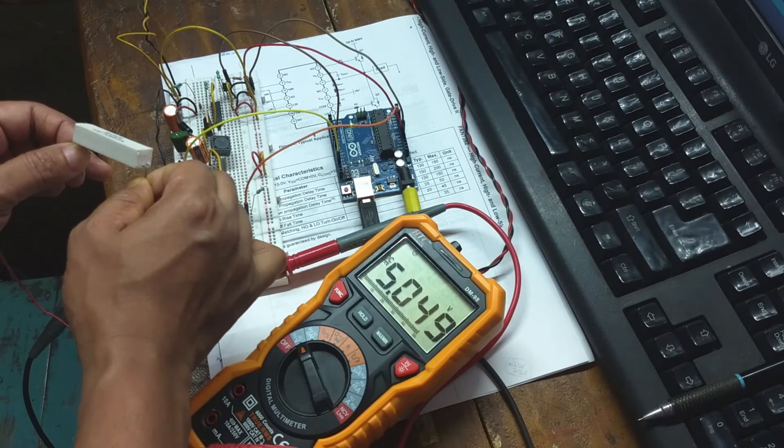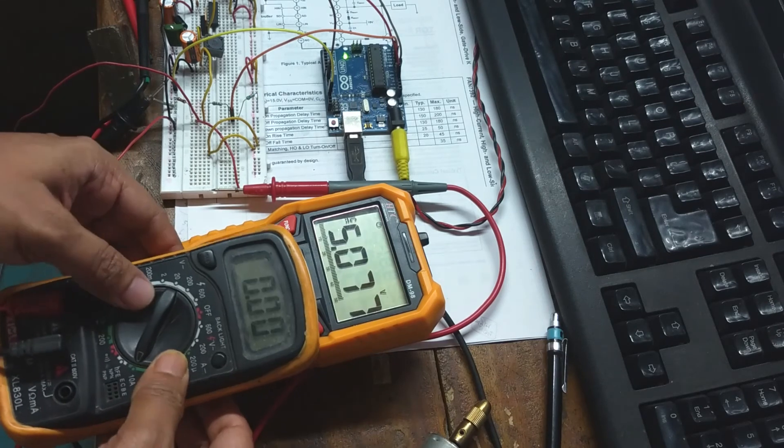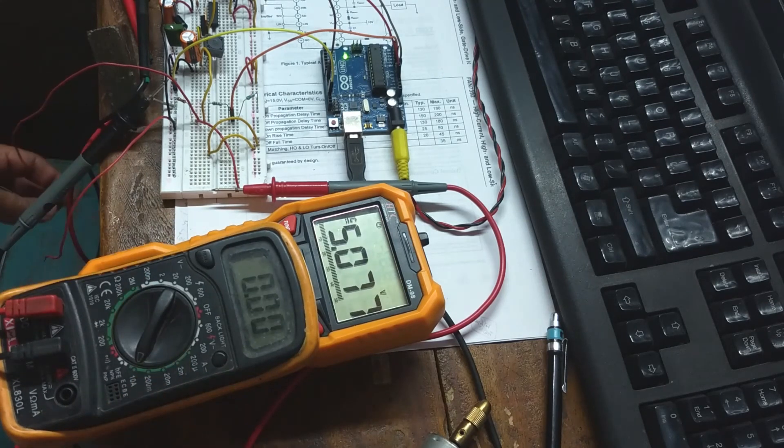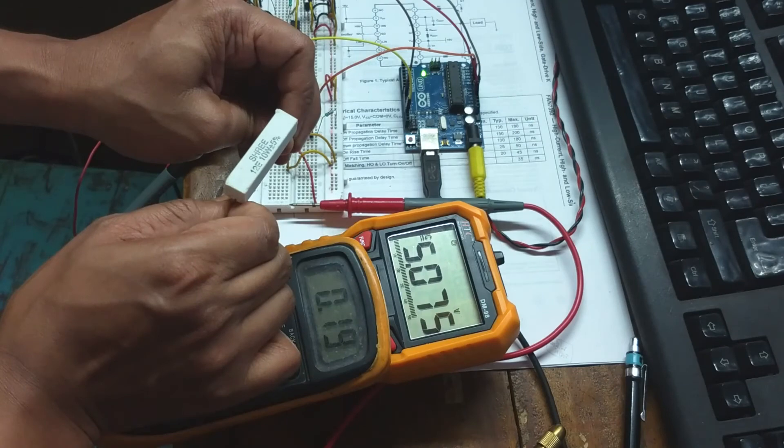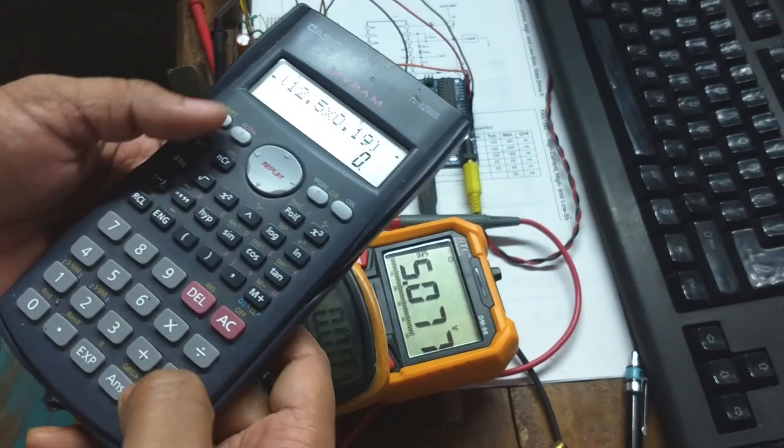To calculate the efficiency of this buck converter, I have connected this smaller multimeter which will show the input current. My battery voltage is 12.5 volt. With 12 ohm load, the efficiency is coming around 90%.